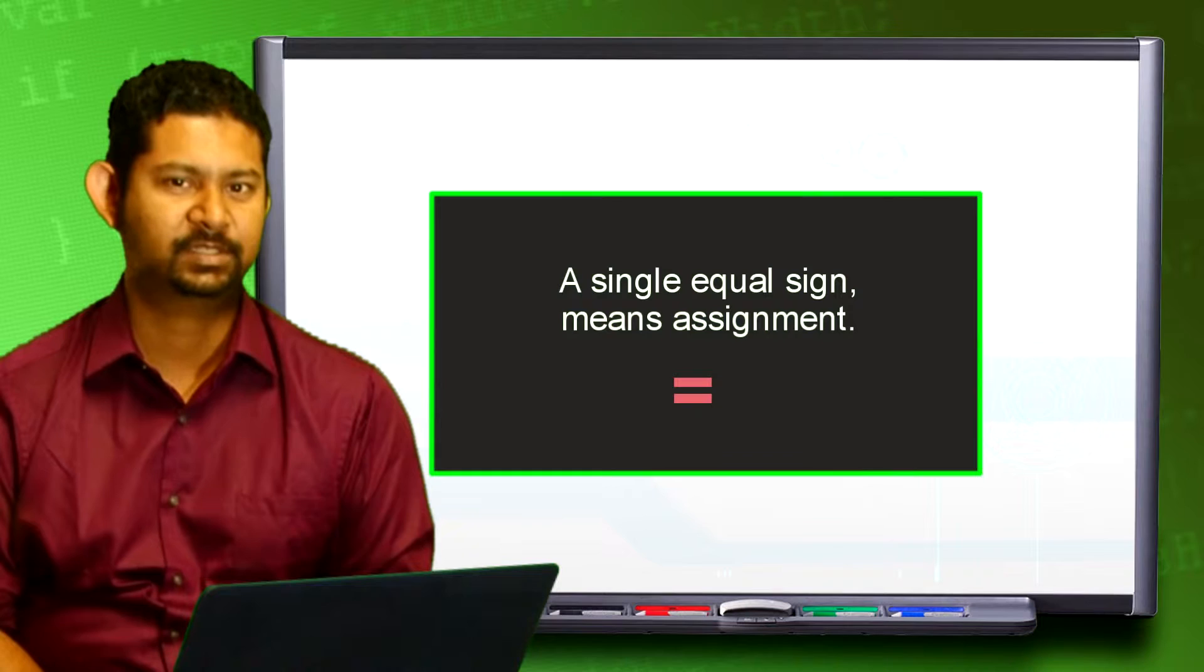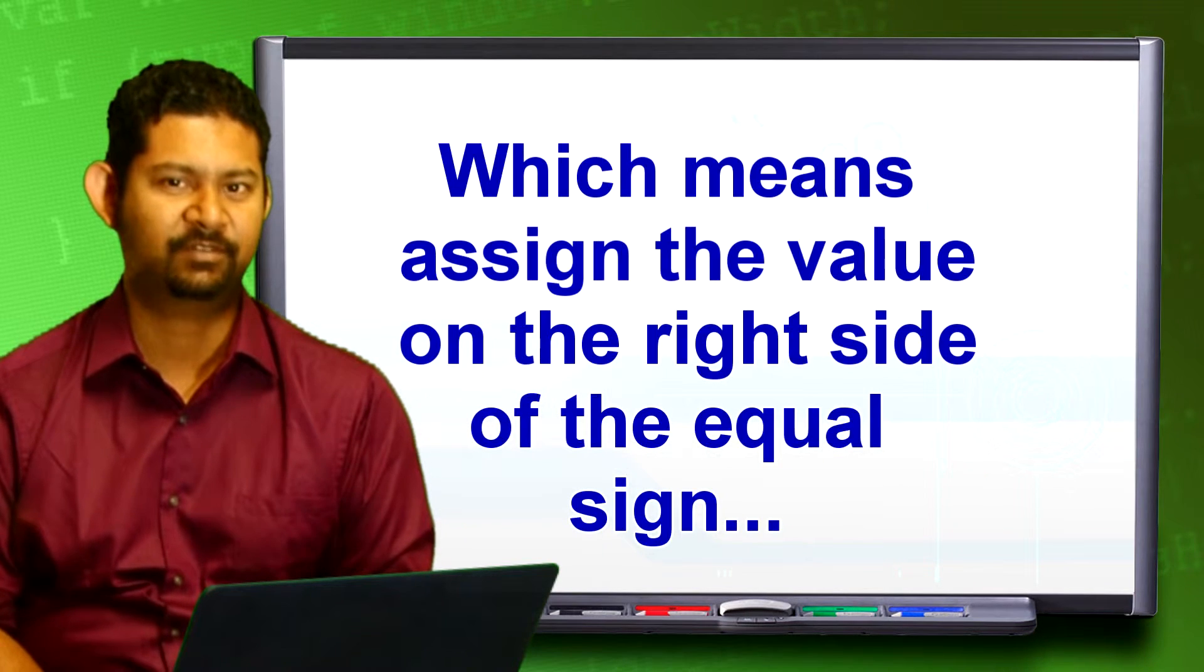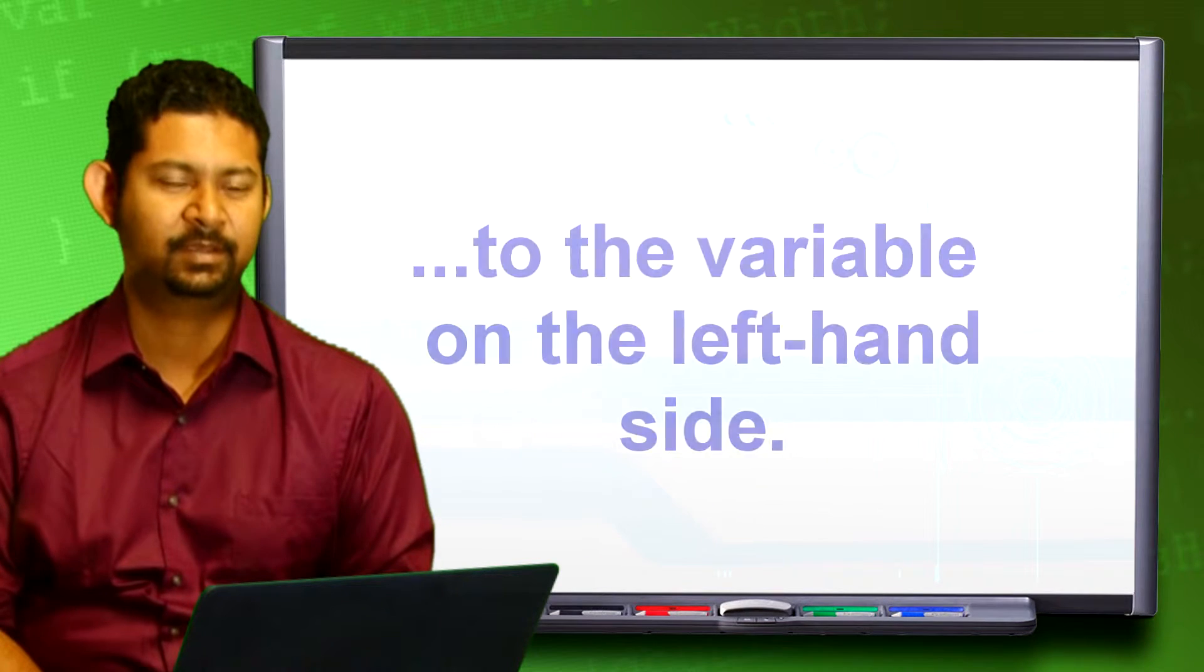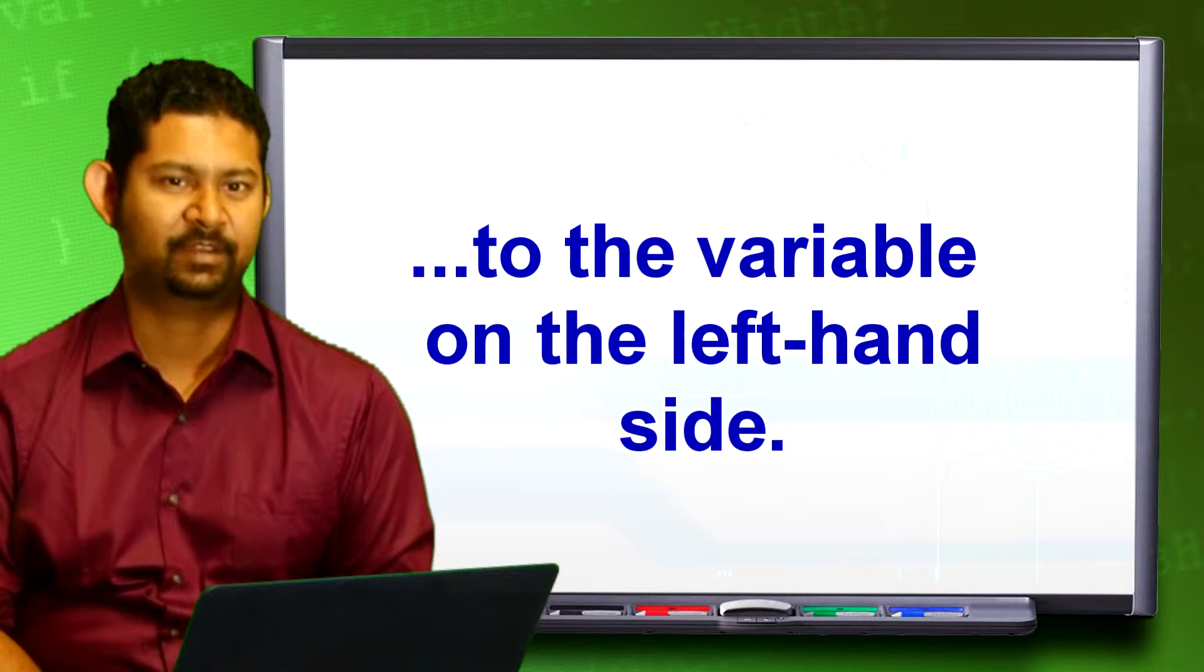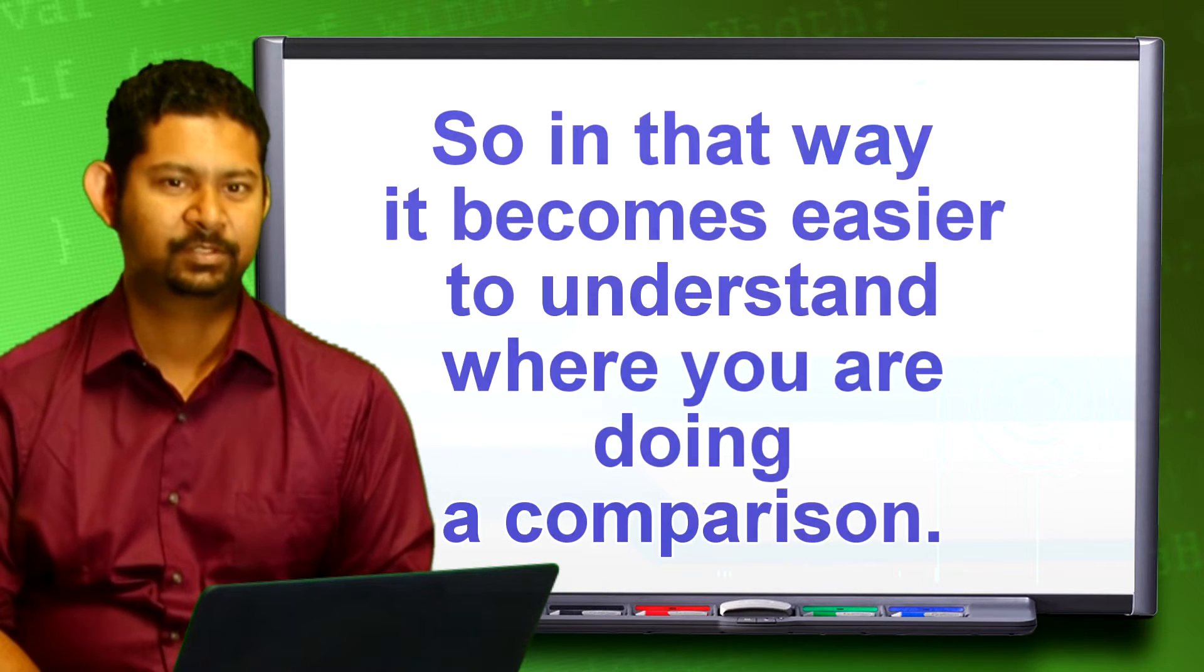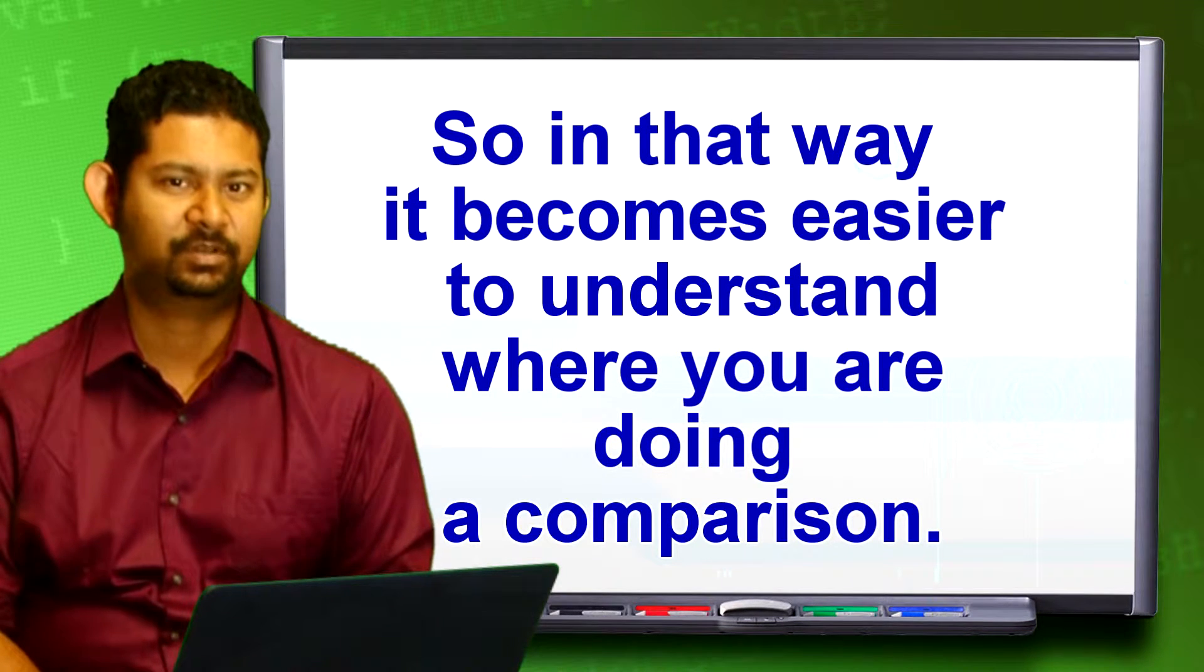A single equal sign means assignment, which means assign the value on the right side of the equal sign to the variable on the left hand of the equal sign. So in that way, it becomes easier to understand where you are doing a comparison.